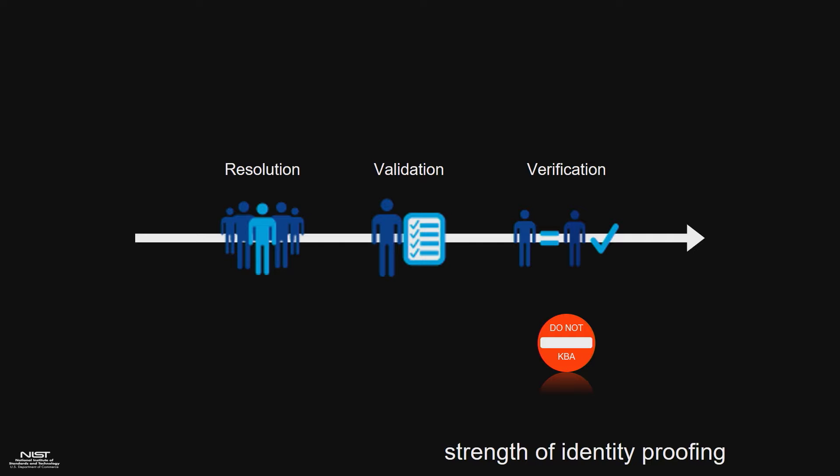Validation is: is the information correct, not fraudulent, authentic? Verification is: is the data I'm presenting actually for me? The example use case is something the post office is doing today. They have an in-person proofing pilot where they're actually sending mail carriers to your home if you want to get in-person proofed.